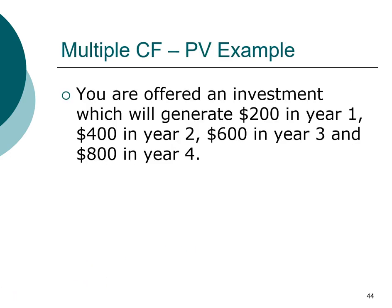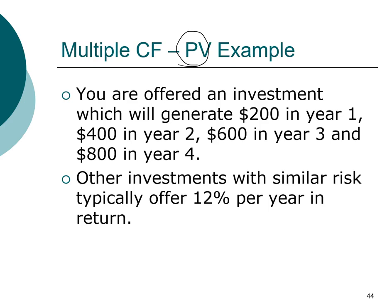Let's take a look at another example. In this example we have more than two cash flows — we have multiple cash flows. But instead of computing the future value, we are asked to find the present value. In addition to the cash flows, we need to know the discount rate. A similar investment with similar risk offers 12% per year in return. Remember that return and interest rate serve the same function — so the discount rate is 12%.